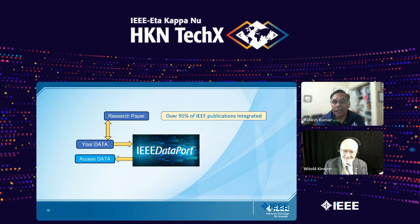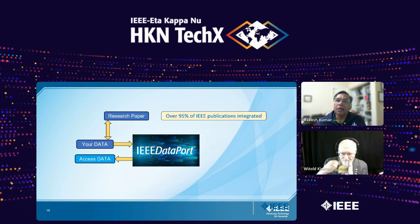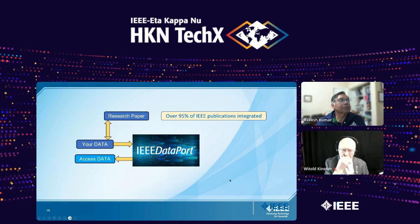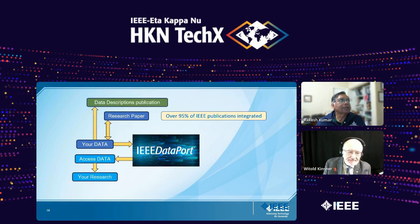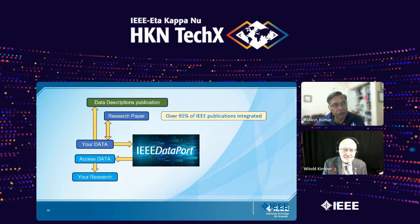Using existing data can help you get to the end goal faster, and that is what the funding agencies are looking for — using data from others to enhance the quality and progression of research. One more thing we're doing that hasn't been publicized yet: we have created a journal called Data Descriptors. The first issue is coming out in June — about a month and a half away. There you can not only upload your data to DataPort but also write a four-page paper.